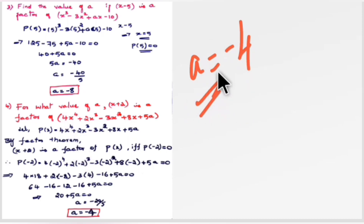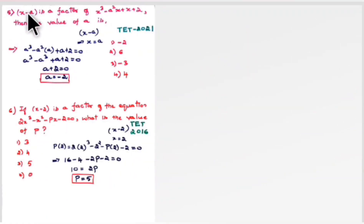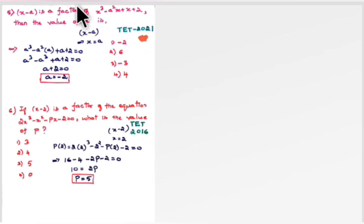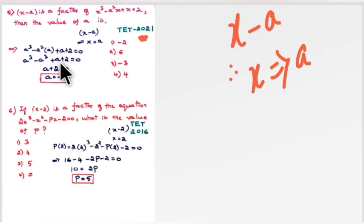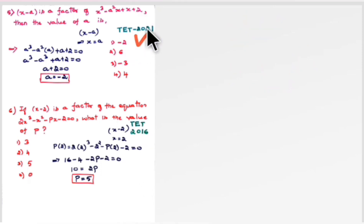Here is a similar question from factor theorem asked in TET 2021: if (x − 2) is a factor of x³ − x² + ax + 2, find the value of 'a'. The divisor is (x − a) with a = 2. Substitute x = 2 (i.e., wherever you find x, substitute 2): you get an equation where the cube terms cancel, and solving gives a = −2. So option 1, minus 2, is the correct answer.